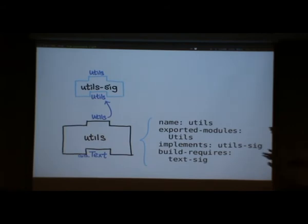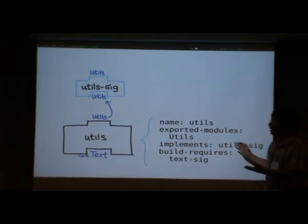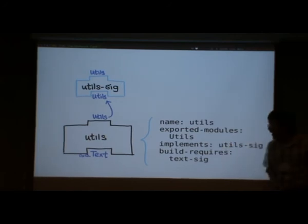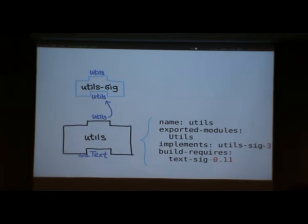One very good thing about signature packages is that now, instead of just saying my utils package exports the module utils, I can also say: I implement utils-sig. So if you require utils-sig, my package will work for you. And I can also say: I don't depend on a specific version of text, I just depend on some signature of text — the specific one I need. And obviously you want version numbers on both of these signatures because a signature may evolve over time.